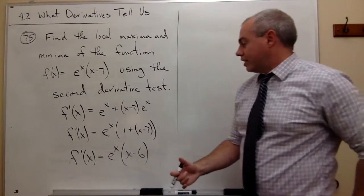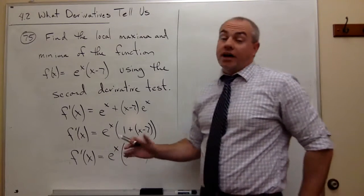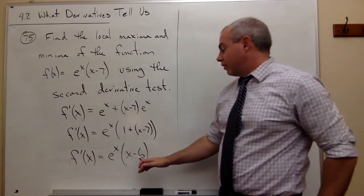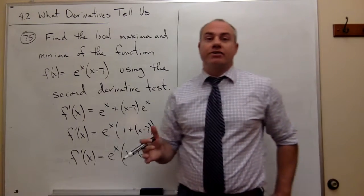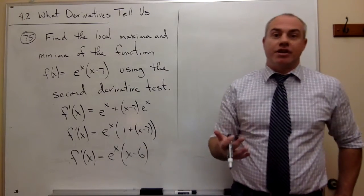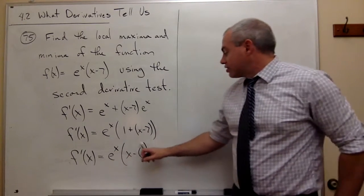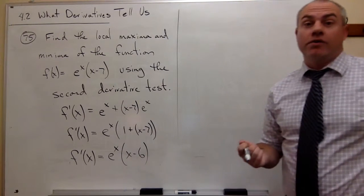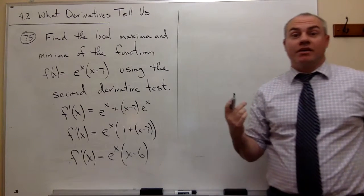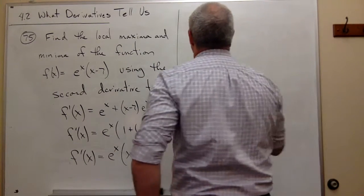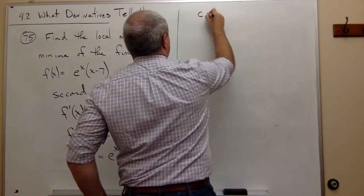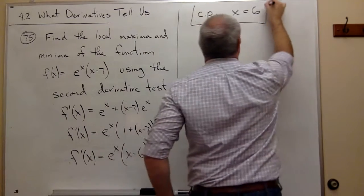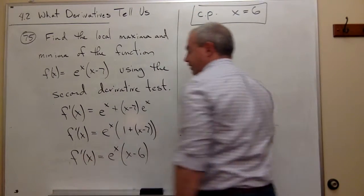What are the critical values here? That's where this thing would be undefined — which is nowhere in this case because there's no denominator — or equal to zero. e^x is never zero, so x minus 6 must be the one that's zero. So x minus 6 equals zero, meaning x equals 6. That is my critical point — x equals 6 makes the first derivative zero.